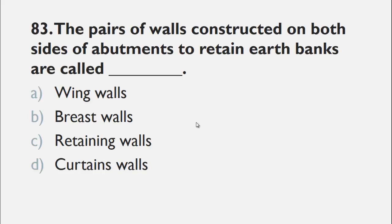MCQs number 83 is, the pairs of walls constructed on both sides of abutments to retain earth banks are called a wing walls, b breast walls, c retaining walls, and d curtains walls. Wings walls are the walls that are constructed on both sides of abutments. So, the right choice for this question is a wing walls.